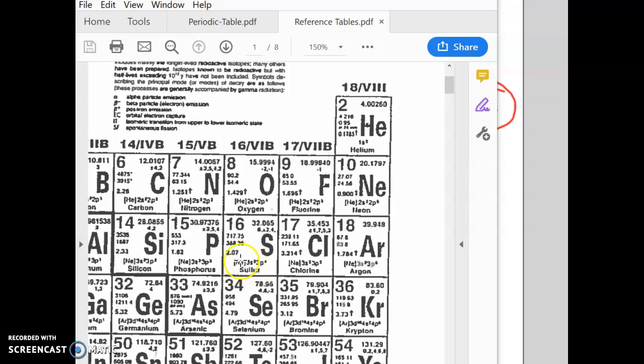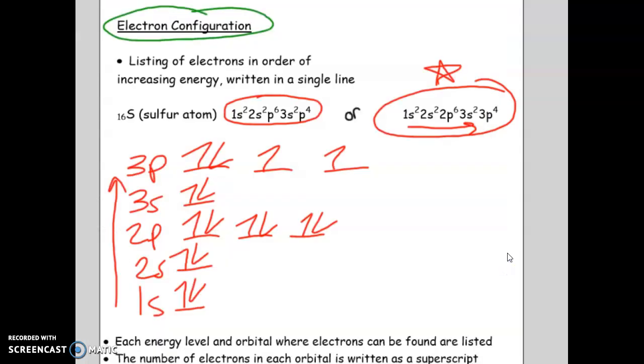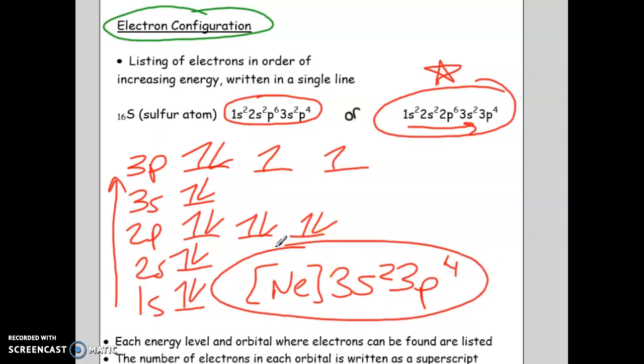Notice this says neon symbol in brackets, and then it says 3s23p4. So I'll show you what that means. I'll write it down here. So it says neon, and then 3s23p4. So what this is called is an abbreviated electron configuration.